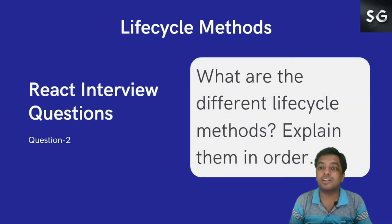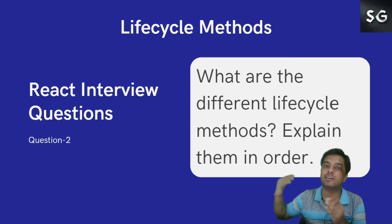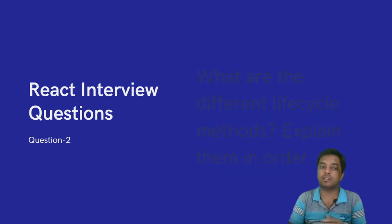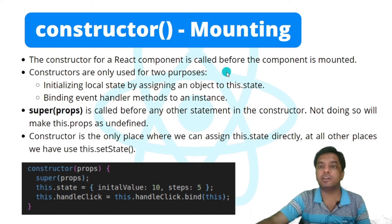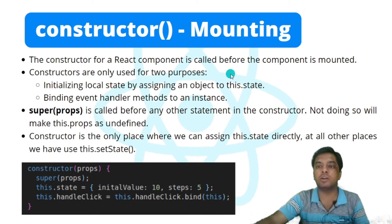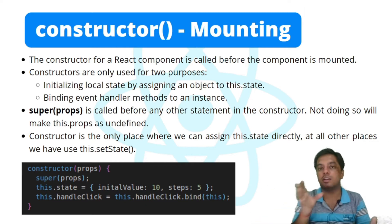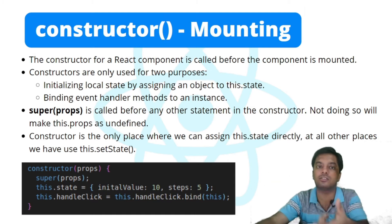We'll now explain the different lifecycle methods in the order they are called in the lifecycle of a component. The very first one is the constructor, which comes in the mounting phase. The constructor for a React component is called before the component is mounted — that is, before it is inserted into the DOM tree. Constructors are used for only two purposes: first, initializing local state by assigning an object to this.state; second, binding event handler methods to an instance.